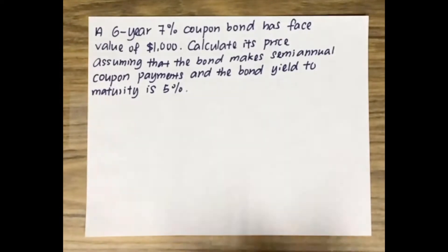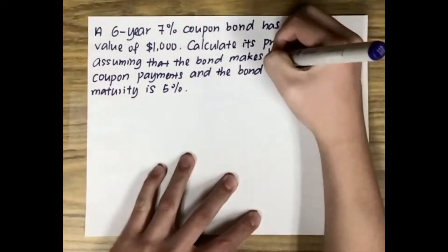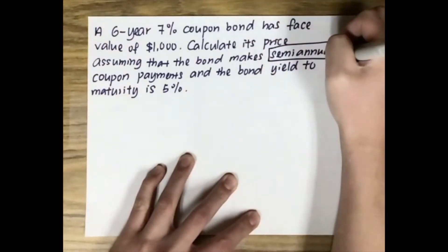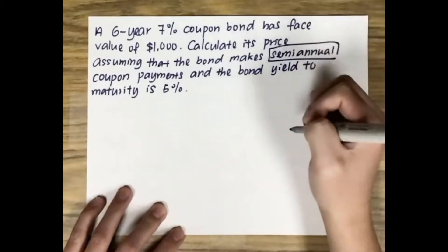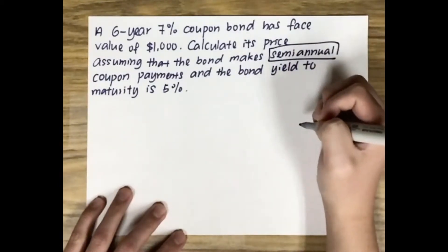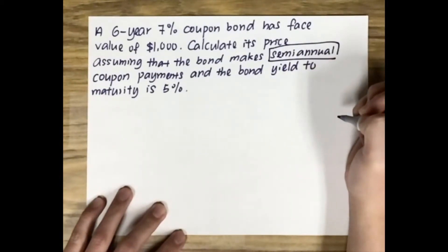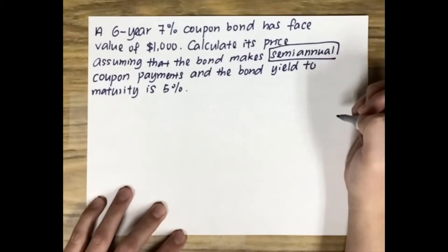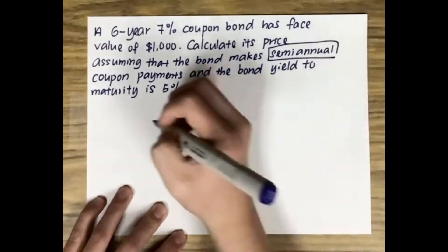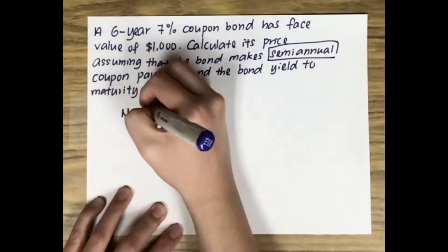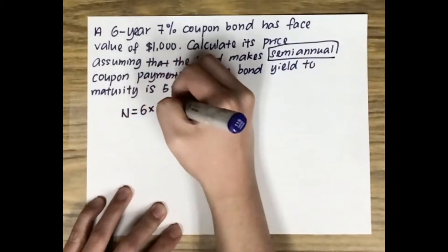When we see the word semi-annual, we know that the bond will pay coupon twice a year. In this case we either have to multiply or divide most of the variables by 2. So let's get started. We know that this is a 6-year bond and the bond will pay coupon twice a year, so N will be 6 times 2, which will be 12.